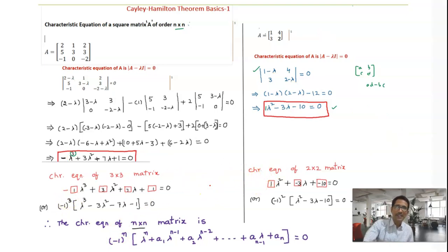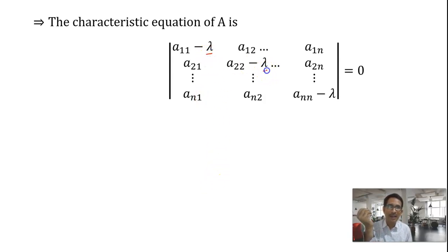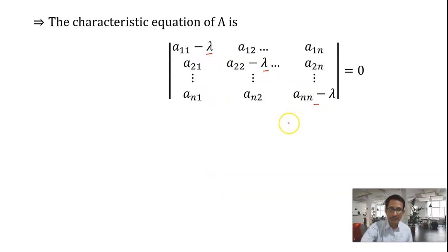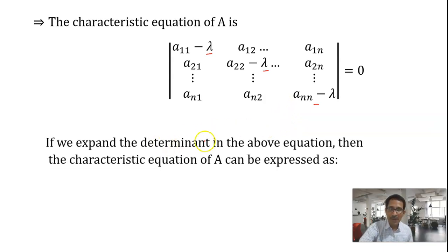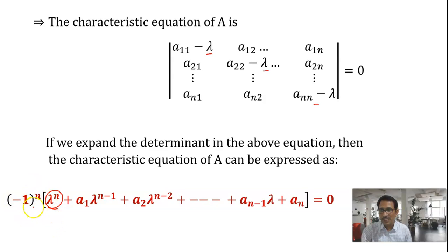We will now put these observations into words to write the next part of the proof. The characteristic equation of A has the form: determinant of (A minus lambda I) equals 0. If we expand this determinant, since we have an n by n square matrix, we get a polynomial equation of degree n whose leading coefficient is (minus 1)^n.